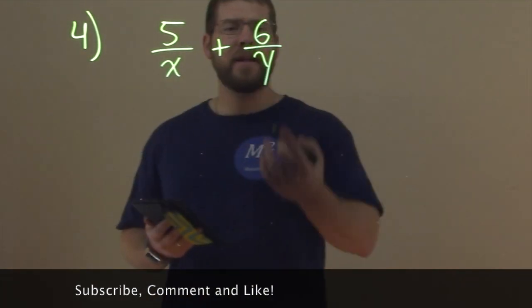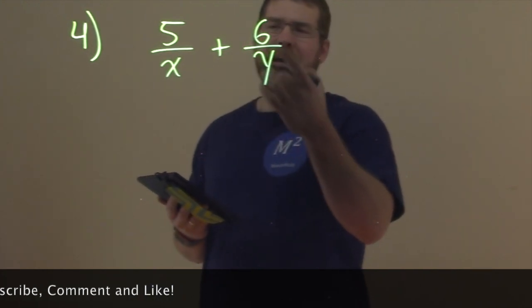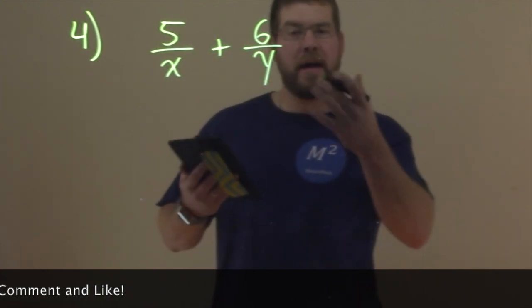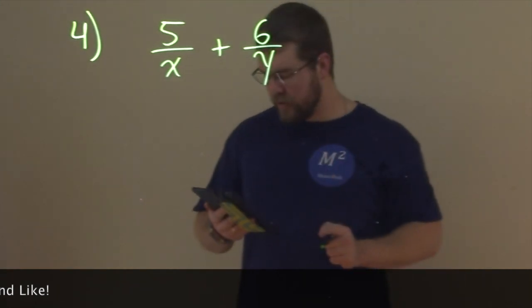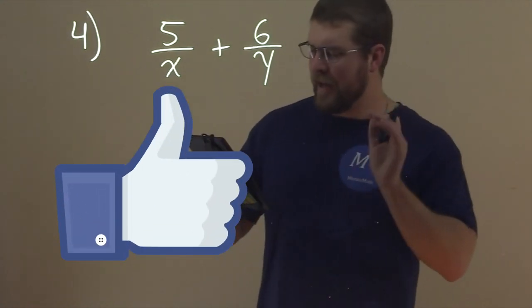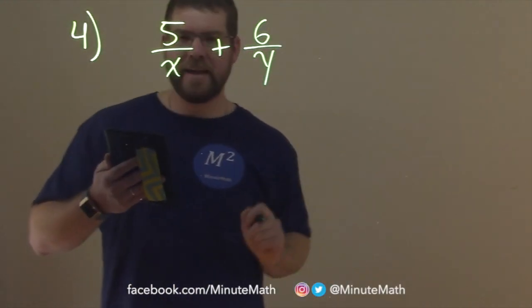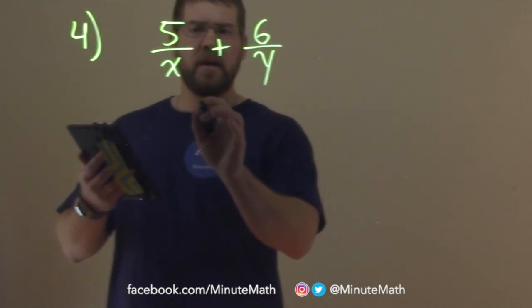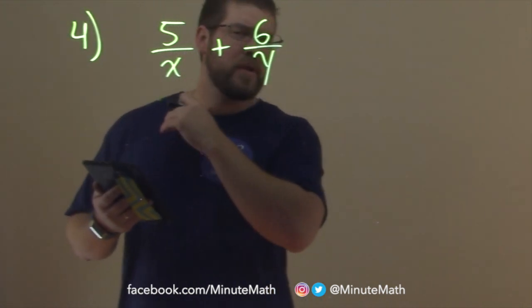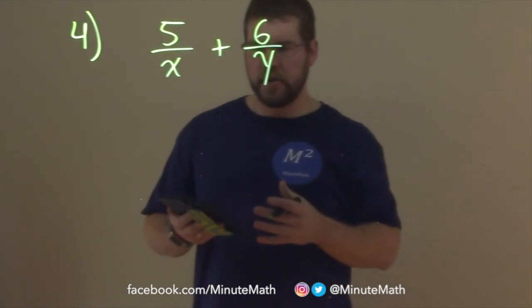And so this common denominator is trying to find, basically, how can we adapt both parts here to have the same denominator. How can we adapt this? We know that we can multiply a number by one, and it doesn't change it.